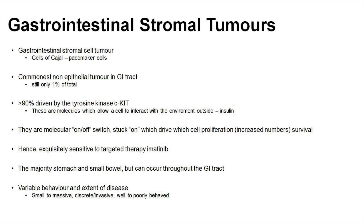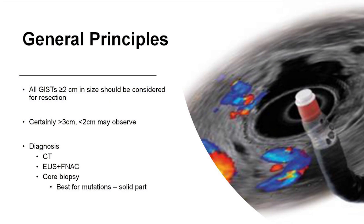Most GISTs are in the stomach, but they can occur throughout the GI tract. General surgical principles are that all GISTs greater than two centimetres should be considered for resection — that's the surgical term for taking something out. Certainly if they're greater than three centimetres, one is always thinking about taking them out, but between two and three they're often observed with CT scans.